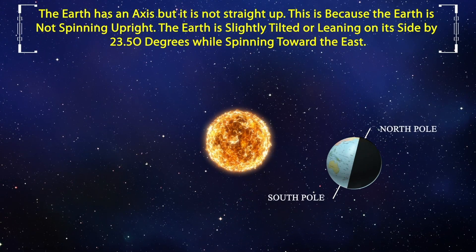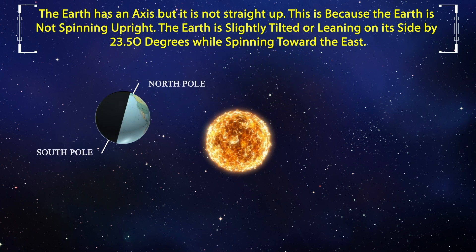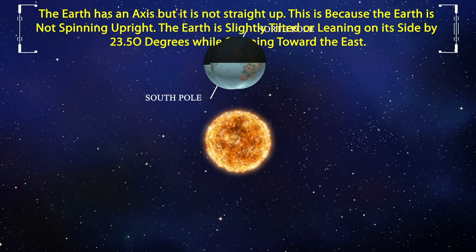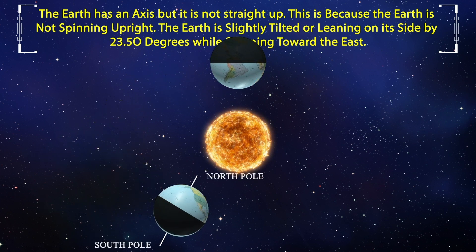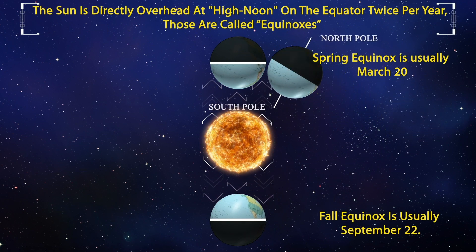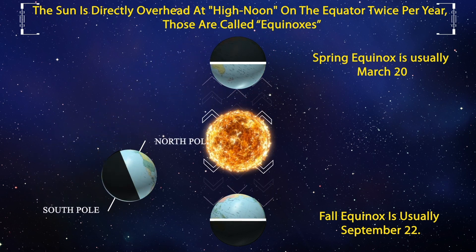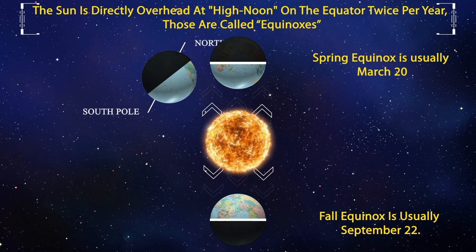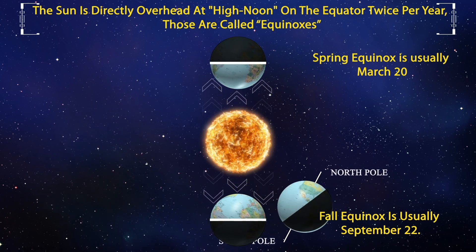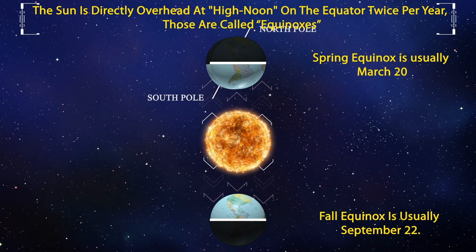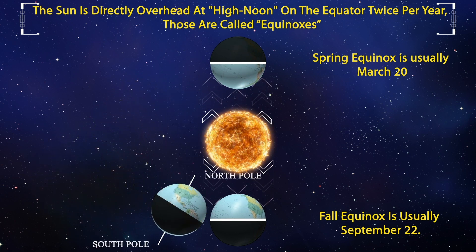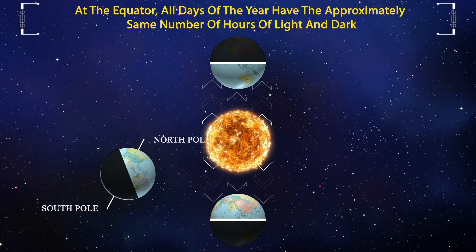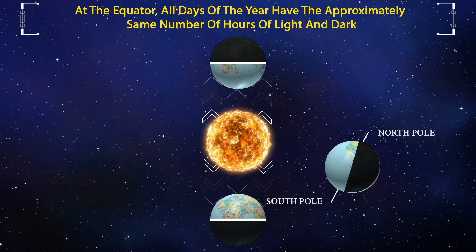The earth has an axis but it is not straight up, because the earth is not spinning upright. The earth is slightly tilted by 23.5 degrees while spinning toward the east. The sun is directly overhead at high noon on the equator twice per year — those are called equinoxes. Equinox literally means equal night, giving the impression that night and day are exactly the same length, 12 hours each. Equinoxes happen when the sun is exactly above earth's equator, and at the equator all days have the same number of hours of light and dark.